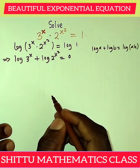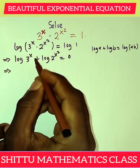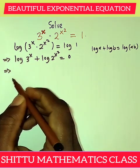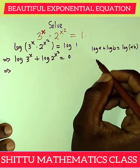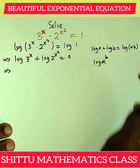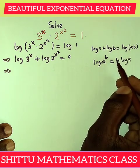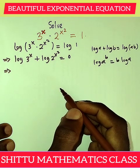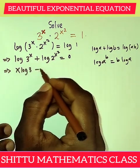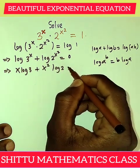Taking the logarithm of 1 gives us zero. Now we are going to bring the powers down using the law of logarithm, where log A to power B equals B times log A — the power comes down and multiplies the entire logarithm. So we get x log 3 plus x squared log 2 equals zero.